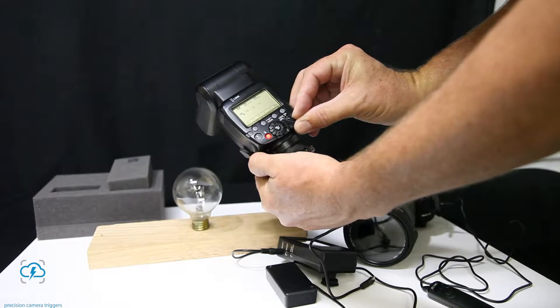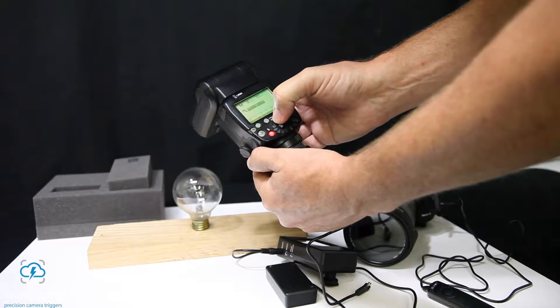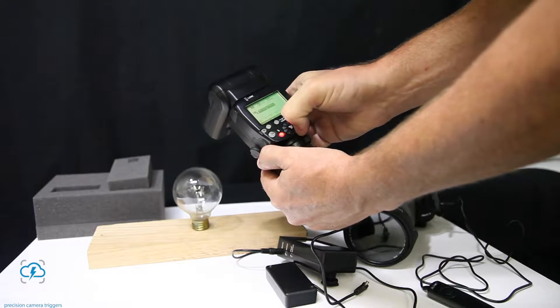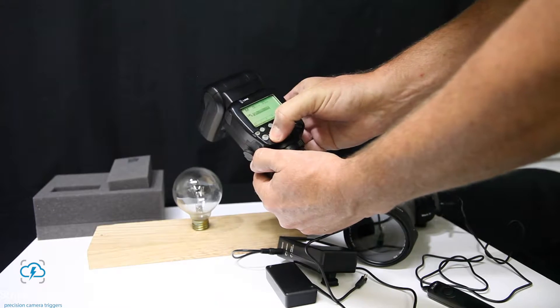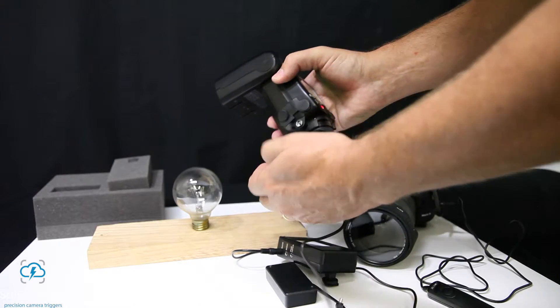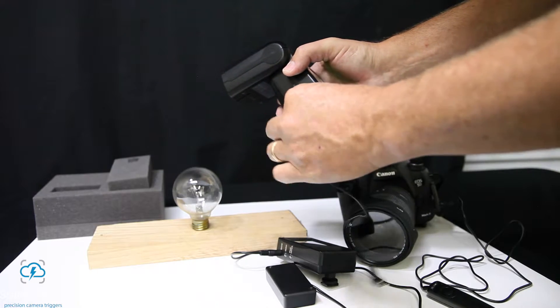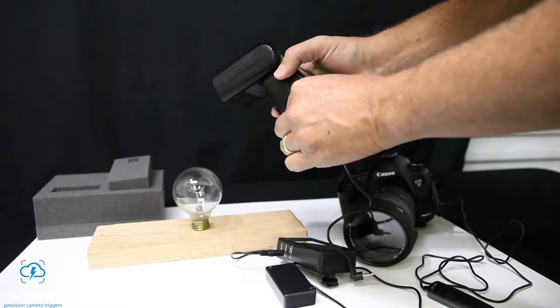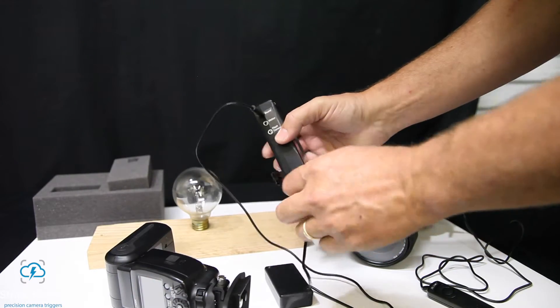Set your flash on manual mode and then adjust to the lowest power setting possible. This will give you the fastest flash, allowing you to freeze the flying glass. In our case, we've set to 1/128th. Once your flash is set, connect the flash sync cable to the flash, and then plug it into the flash camera input jack on the touch. We are ready to go.